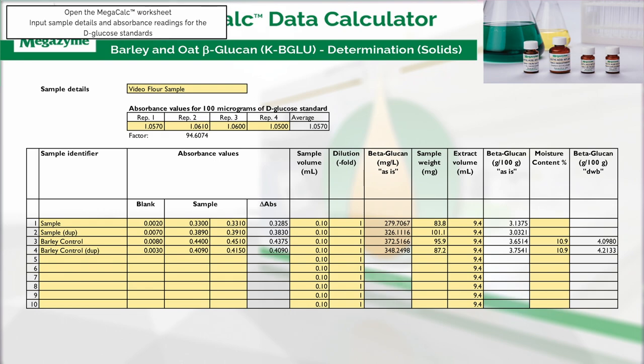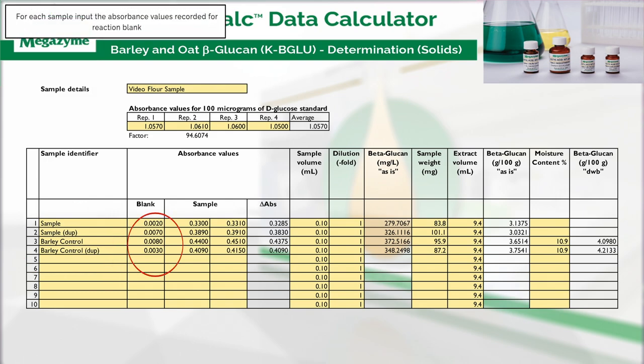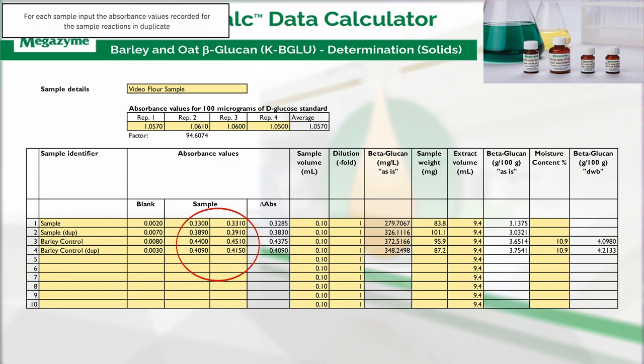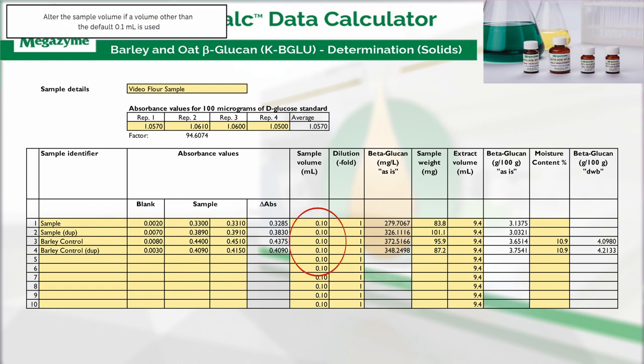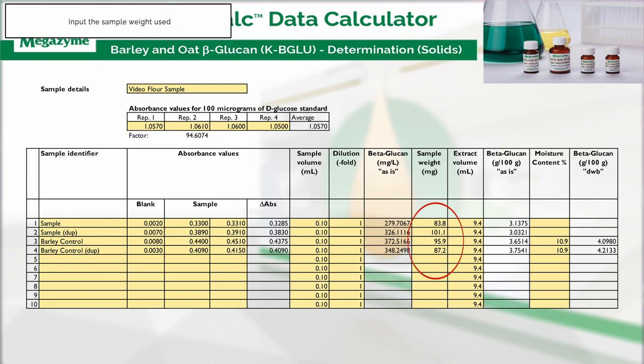Open the Megaquant worksheet and input the following: sample details, absorbance readings for the D-glucose standards. For each sample input the sample identifier. For each sample input the absorbance values recorded for the reaction blank. For each sample input the absorbance values recorded for the sample reactions in duplicate. Alter the sample volume if a volume other than the default 0.1 milliliters is used. If dilution of the sample has been performed prior to the GOPOD assay, then input the dilution factor used. If no further dilution was performed, the dilution factor is 1. Input the sample weight used. Alter the extract volume if a volume other than the default 9.4 milliliters has been used.